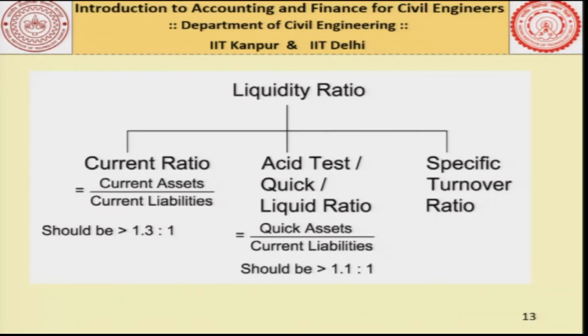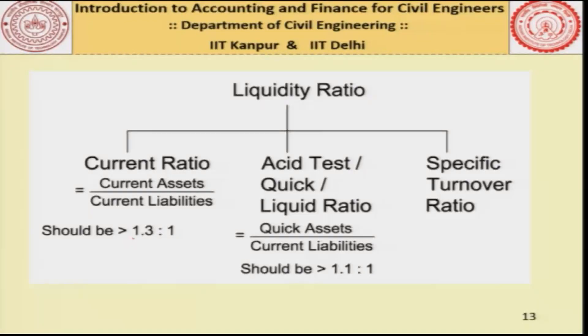Coming to the liquidity ratio, we have the current ratio, the asset test, and the specific turnover ratio. In this lecture I would not really spend too much time defining each of these ratios — we will define some and upload basic definitions on the forum. As far as current ratios are concerned, the standard for construction companies is that the current assets to current liabilities ratio should be greater than 1.3 to 1 — that is, current assets should be at least 30 percent more than current liabilities.